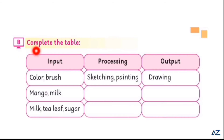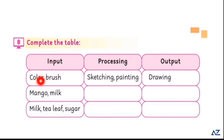Complete the table: input, processing and output. Dear kids, now you have to complete this table. You have to think about it and tell us that if we process this, what output will we get. Like color, brush — input; sketching — processing; and drawing — output.